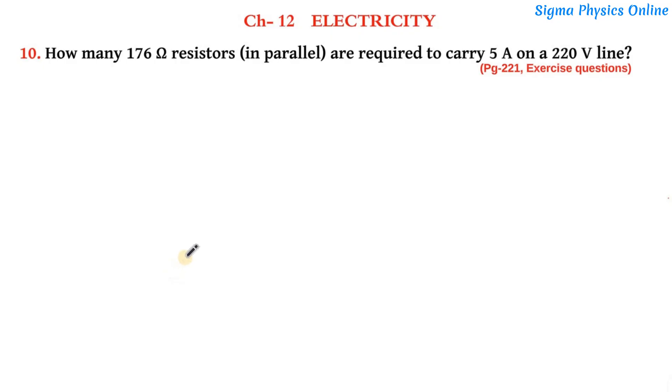Hello students, welcome back. Let's solve exercise question number 10 of Chapter 12 Electricity from Class 10 NCERT science textbook. We have a very interesting question here: How many 176 ohm resistors in parallel are required to carry 5 amperes on a 220 volt line? First, let's draw the circuit diagram to understand this question, and then we'll solve it.